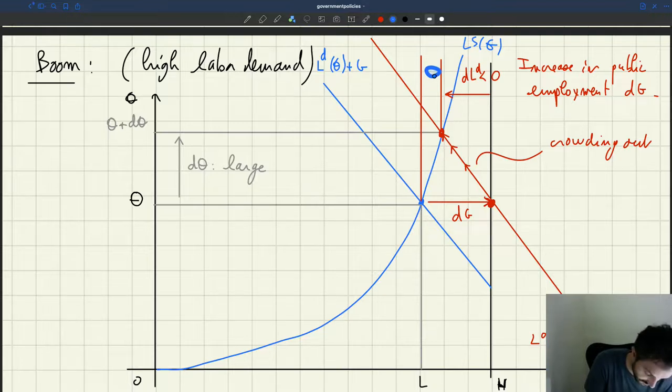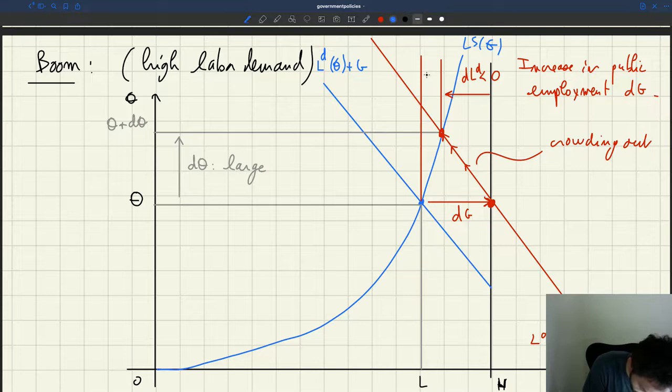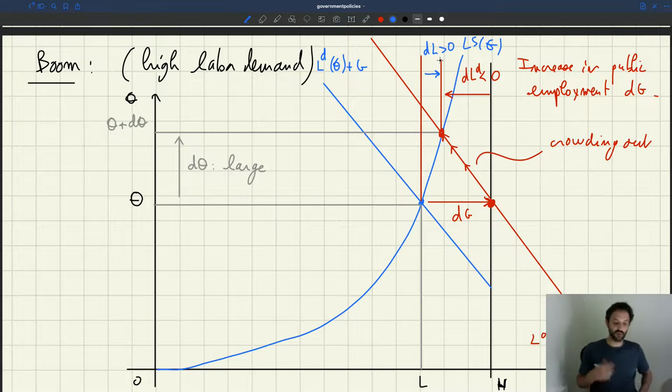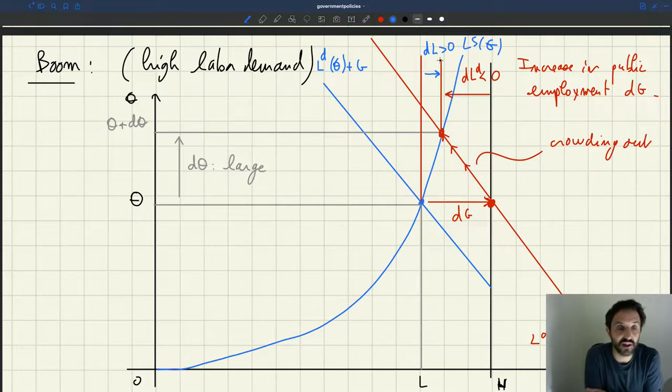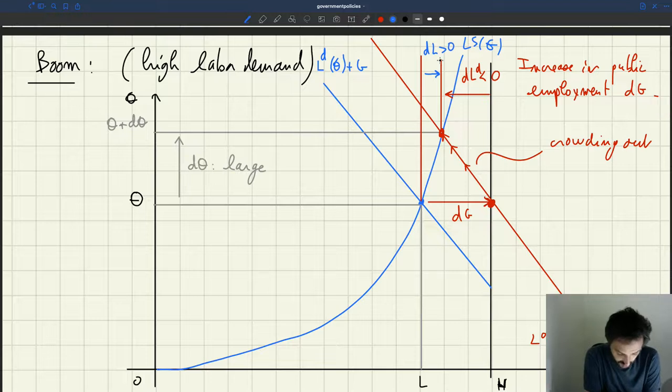So this is DL. So DL is still positive. We know the multiplier is always positive. We know that hiring workers in the public sector always has a positive effect on employment. That effect here is very small because most of the gains in employment due to having more workers in the public sector are eaten up by the reduction in workers in the private sector.